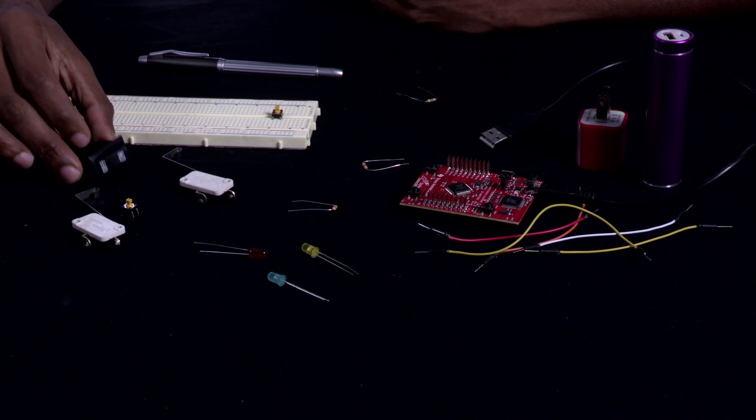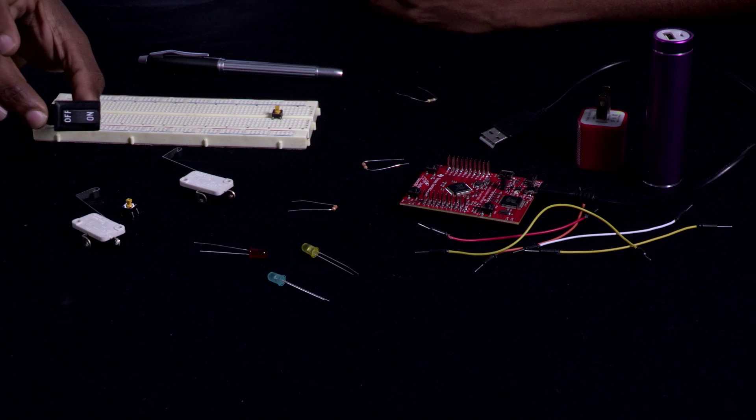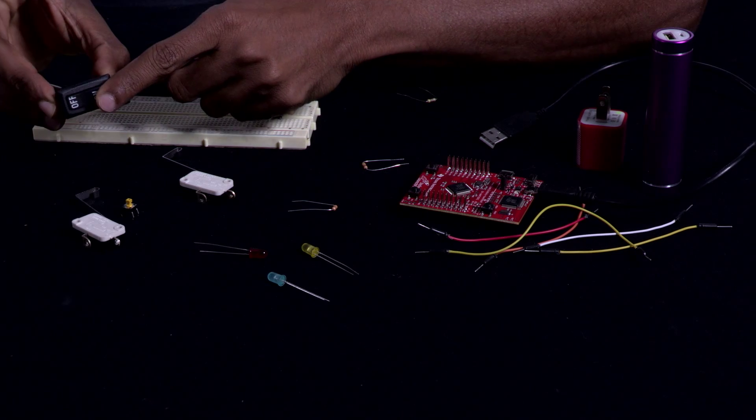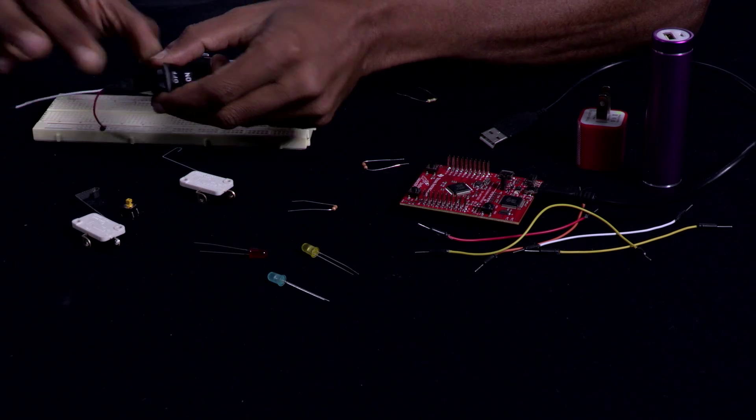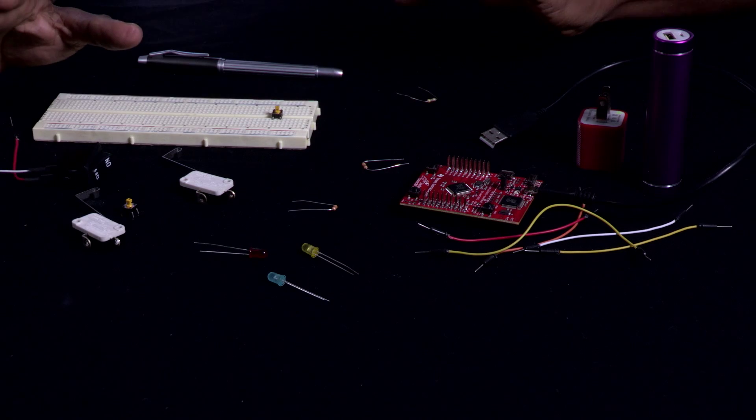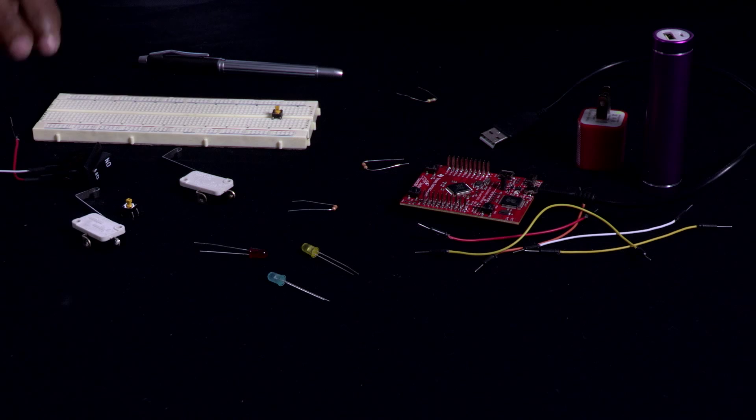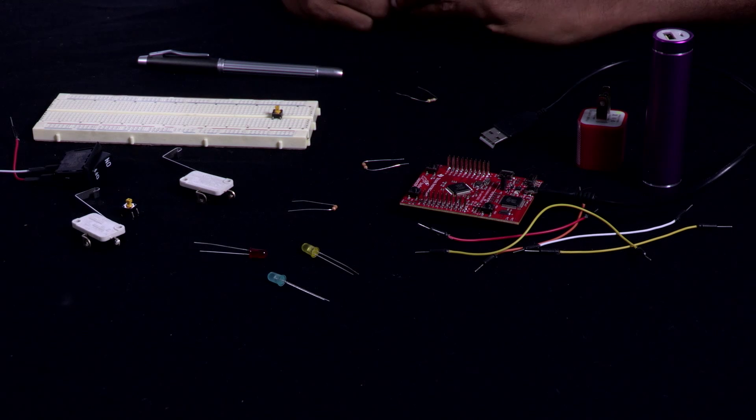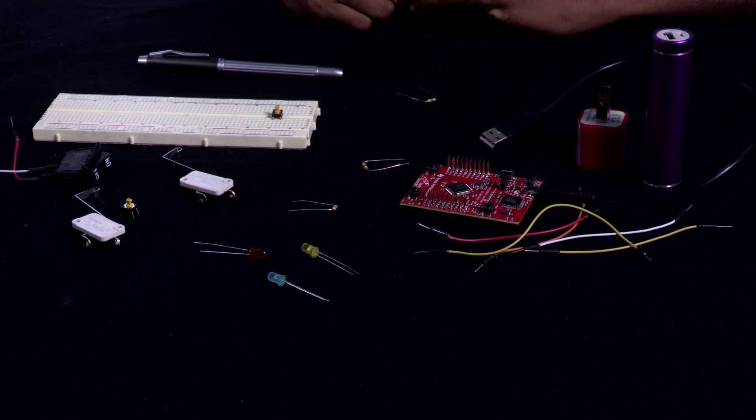The second switch we will use is the activation switch. This is a toggle switch and on-off switch and this one will be used to turn the system on or turn the system off. What color should we have for our flashing alarm?